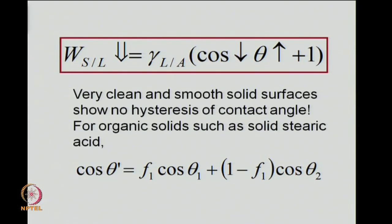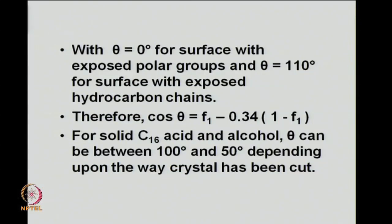When you plug in these values, we get cos theta prime simply written as cos theta equals F1 minus 0.34 times (1 minus F1). Now, if we consider certain solid acids like C16 acid or C16 alcohol, then experimentally theta can be between 100 degrees and 50 degrees depending on how we cut the crystal.